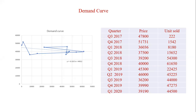I picked the data for you from Q3 2017 till Q1 2020 — prices for different quarters and then units sold. How can I draw this curve?